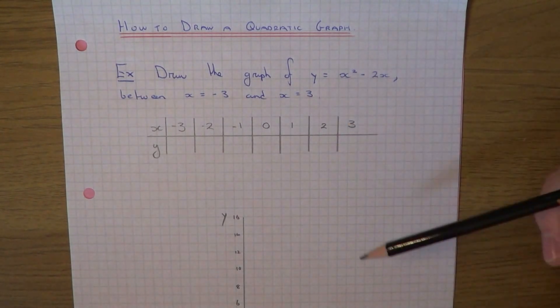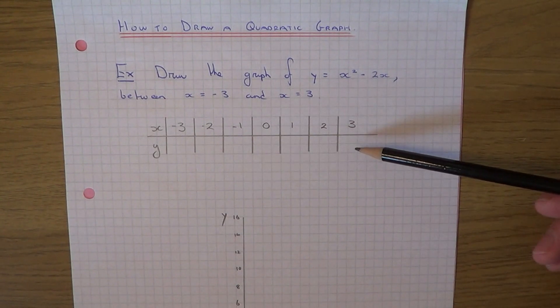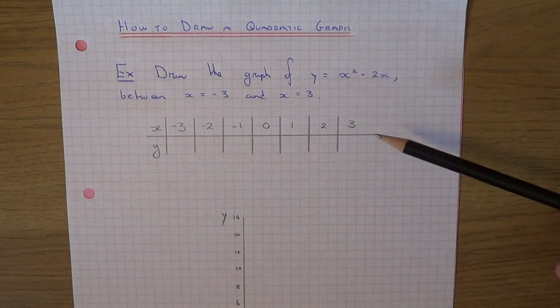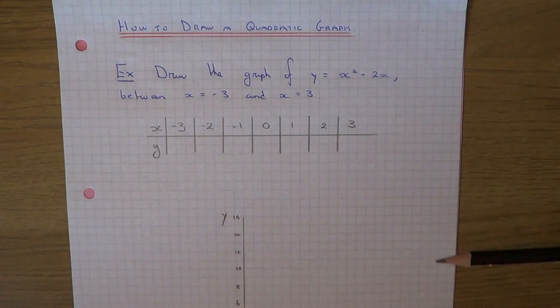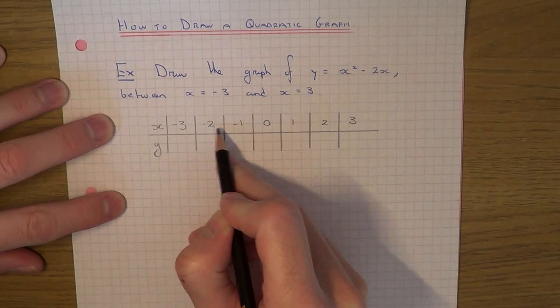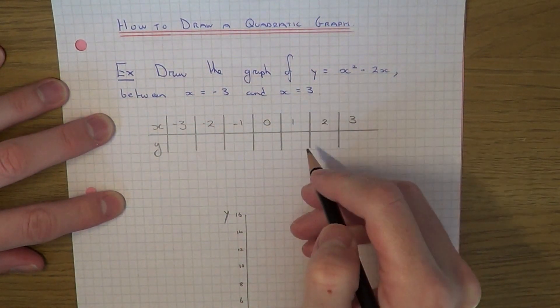So the first thing we need to do is draw up a table of values and work out the y coordinates for the x values between minus 3 all the way up to plus 3. To get the y coordinates, we need to substitute each one of these numbers into the equation which we have here.